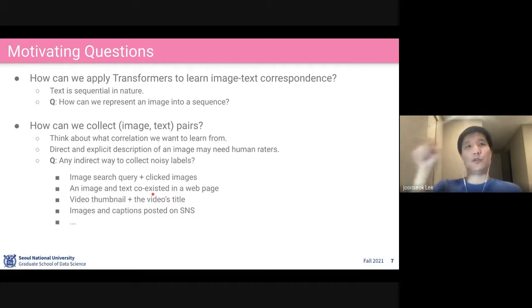Any indirect way to collect this? We can use logs of web search engines, like image search queries and clicked images. Or image and text co-exist in web pages. In Wikipedia, you have images with captions or explanations relevant to that picture. Or in videos, you have the video thumbnail as an image, and the video has its title or description or comments in the same page. You can collect these weakly labeled datasets from the web for free or from publicly available data.